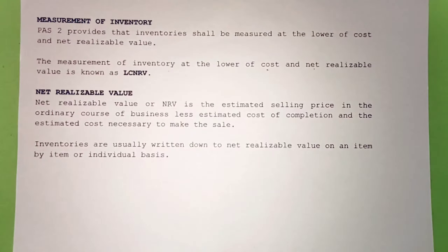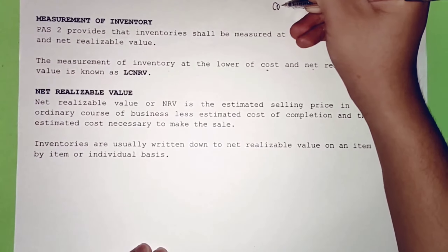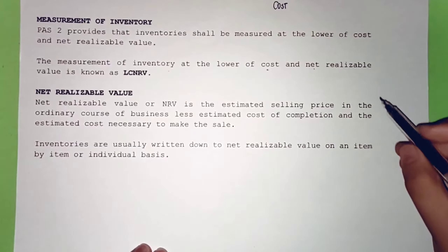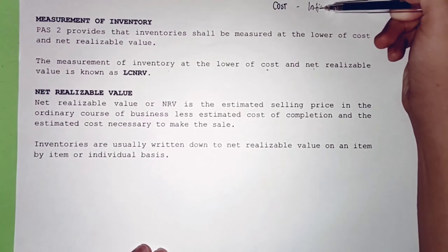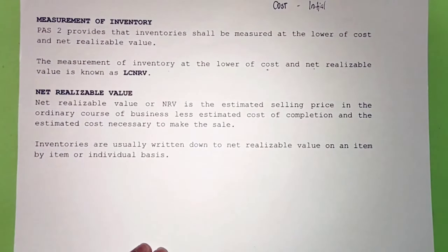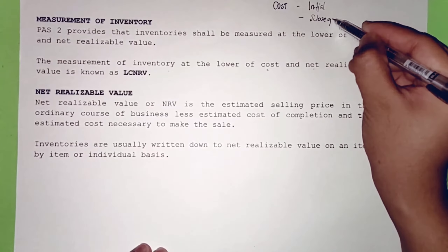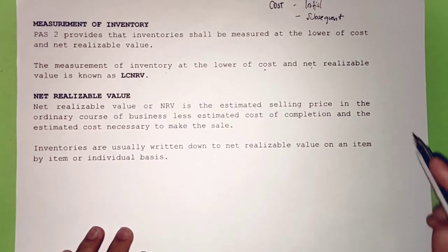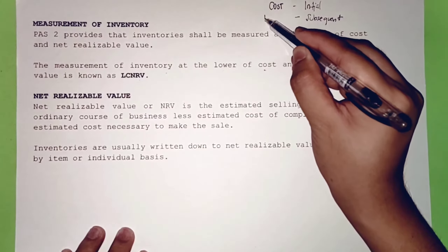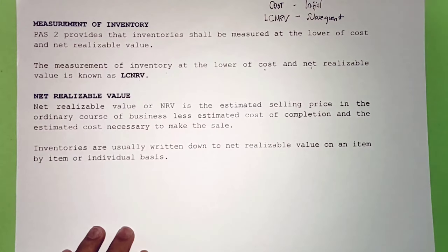The initial measurement of inventory is at cost. The subsequent measurement of inventory is at the lower of cost and net realizable value.